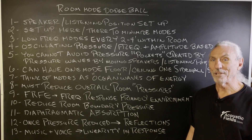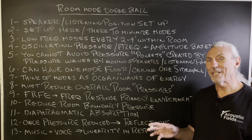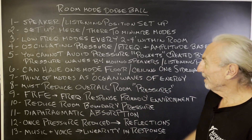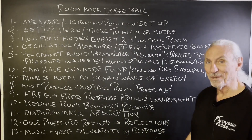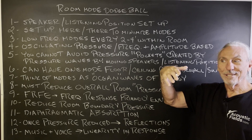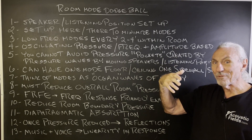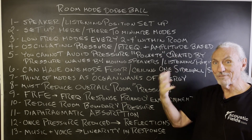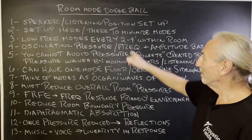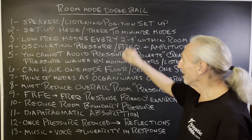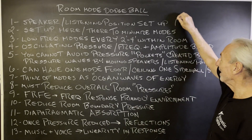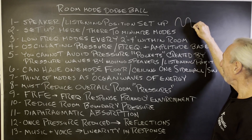It's kind of like pressure and reflections in rooms. You really can't position your way out of them. You can't set up here or there to minimize room modes, because if you have a floor-to-ceiling mode, it's going to be really difficult to get away from that because the ceiling covers the whole room. Low pressure modes occur every two to four feet within your room, and it's oscillating like waves.